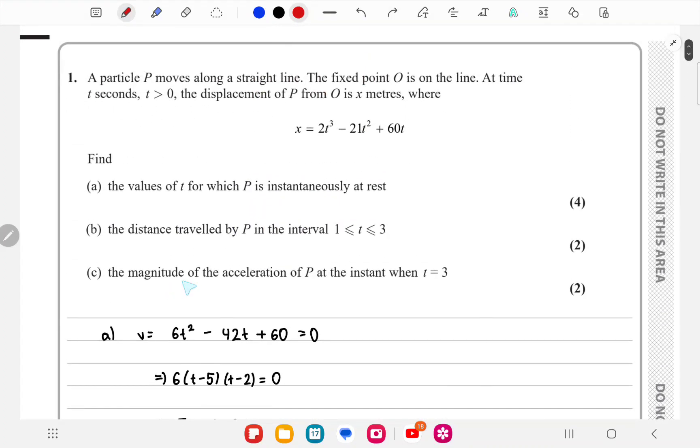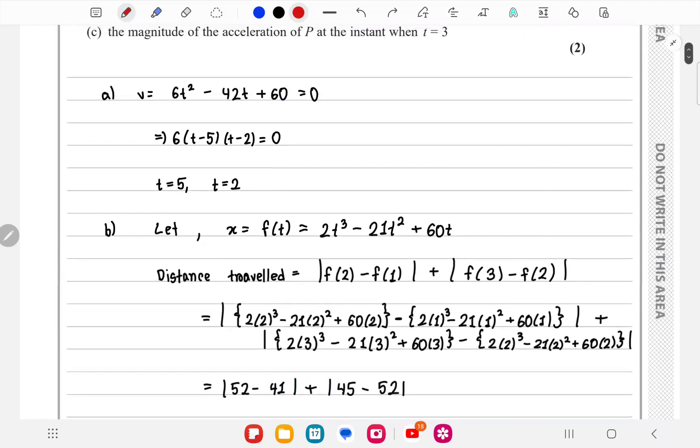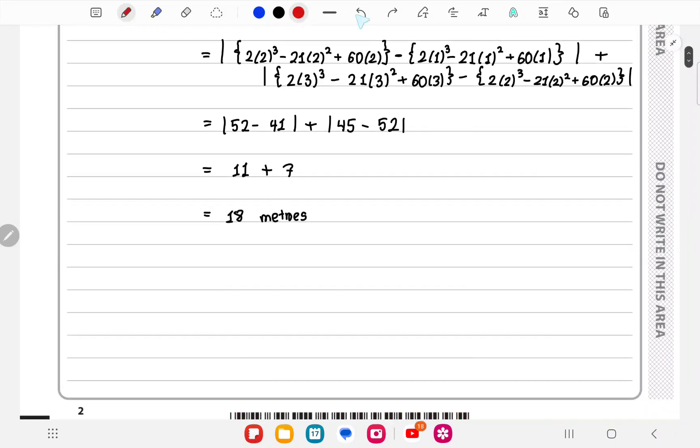In part c we need to find the magnitude of the acceleration at t equals to 3. We need to differentiate v again, this is v. For acceleration we differentiate this again and find the acceleration when t equals to 3. We put in the value of t, we get a equals to minus 6. However, we only need the magnitude, so magnitude of a equals to 6 meter per second square.